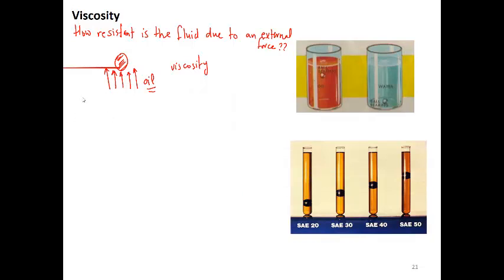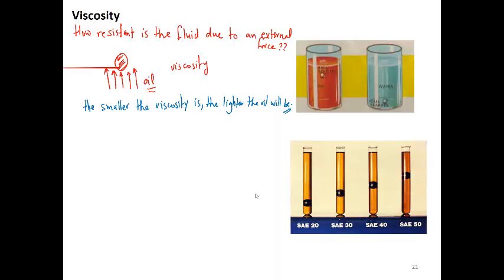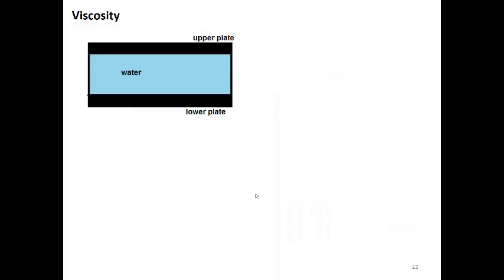The smaller the viscosity, the lighter the oil, and vice versa. If the oil is light, it has a smaller viscosity number; if it's heavy or thick, it has a large viscosity number.